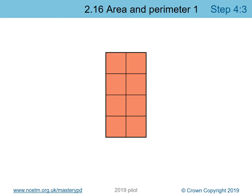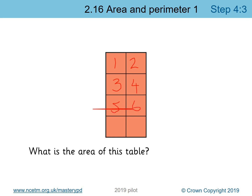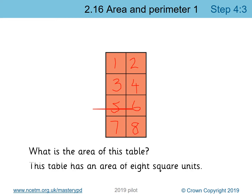If we're calculating the area of a shape — here's my rectangle — we can calculate the area by counting the squares to find how many squares fill that area. The area of this table counted in squares would be: one, two, three, four, five, six, seven, eight.